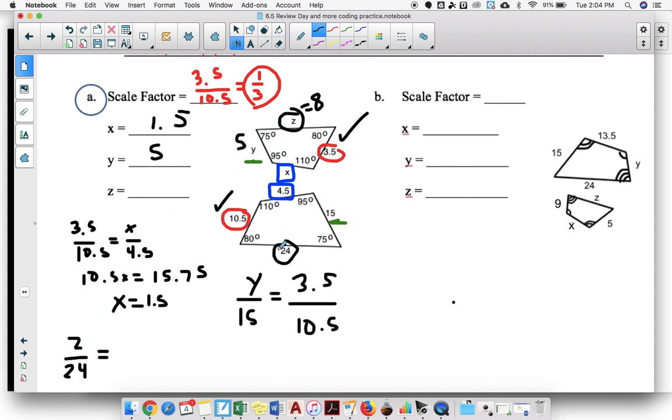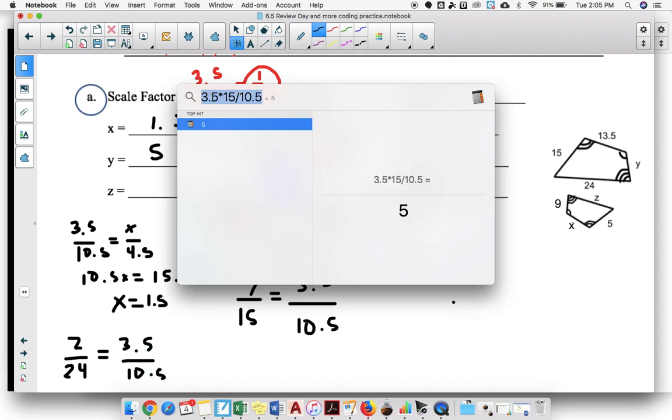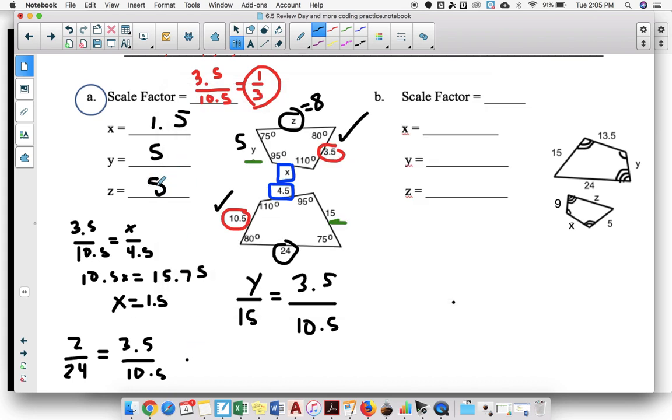Again, going back to the red set, 3.5 over 10.5. If we cross multiply, we're going to take 24 times 3.5 divided by 10.5. And that, as you see, gives us 8. So z is 8.